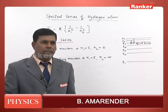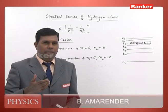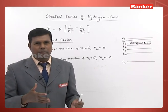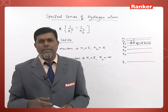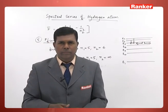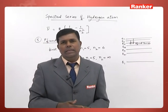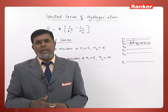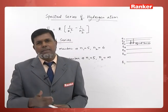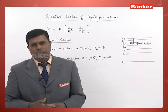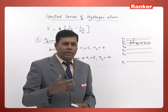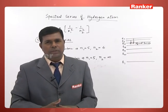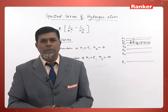The Lyman series lies in the ultraviolet region, while the Balmer series is in the visible region. The Paschen series is in the infrared region, and the Brackett and Pfund series are in the far infrared region. These are the spectral series of the hydrogen atom.